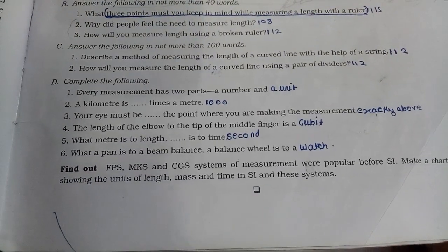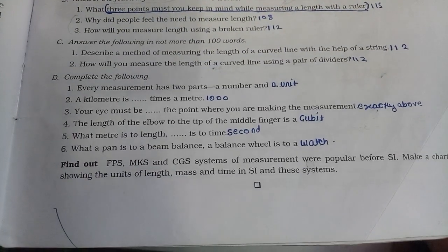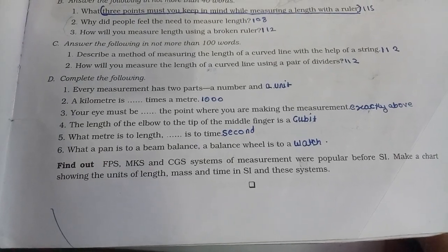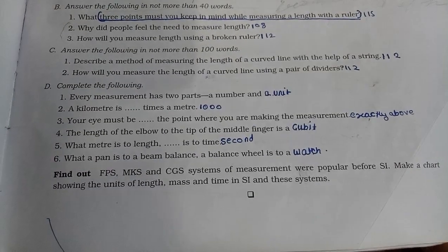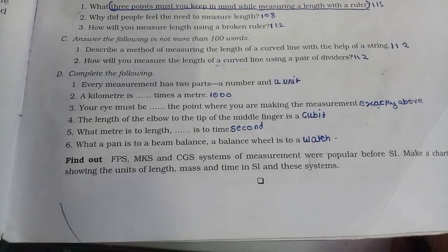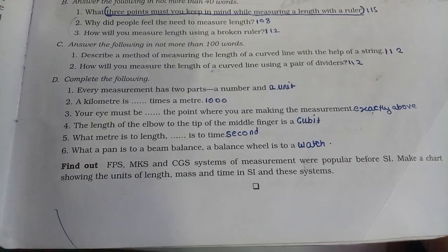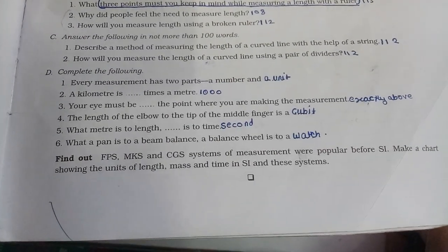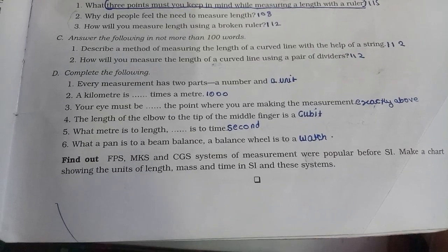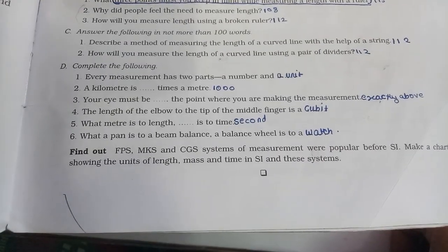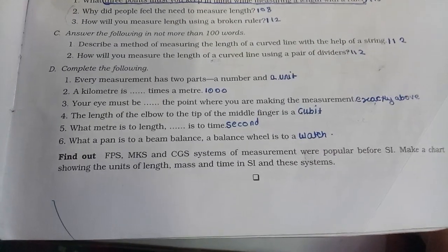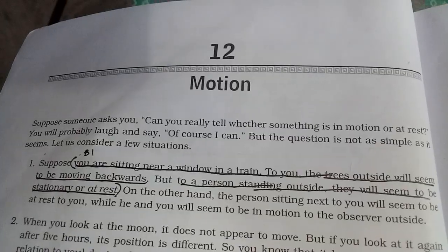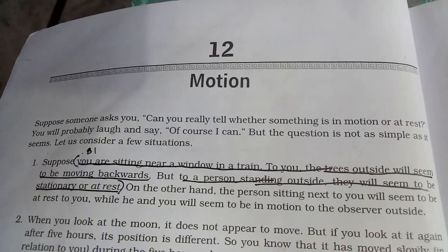Chapter 11: Measurement. Every measurement has two parts: a number and a unit. A kilometre is a thousand times a metre. Your eye must be exactly above the point you are measuring. The length from the elbow to the tip of the middle finger is called a cubit. The SI unit of length is the metre. The SI unit of time is the second. A beam balance measures weight.